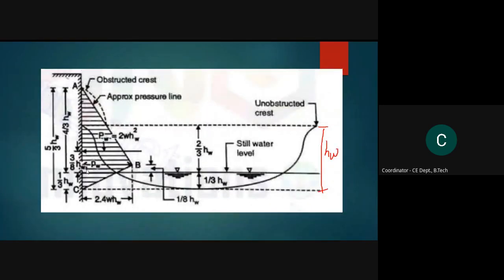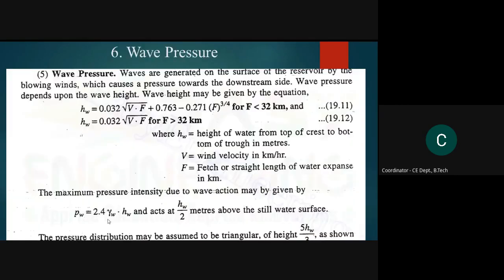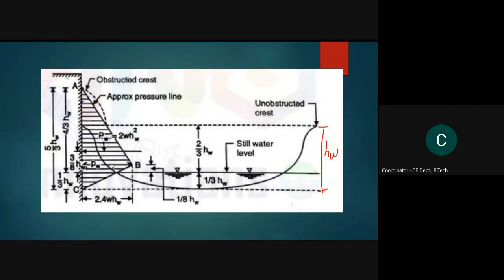The pressure PW acts at HW/2 above still water, which is composed of 1/8 HW above still water and 3/8 HW below, totaling HW/2. The total wave force is calculated as the area of the triangular pressure diagram: ½ × base × height = ½ × 2.4γW·HW × (5/3)HW.